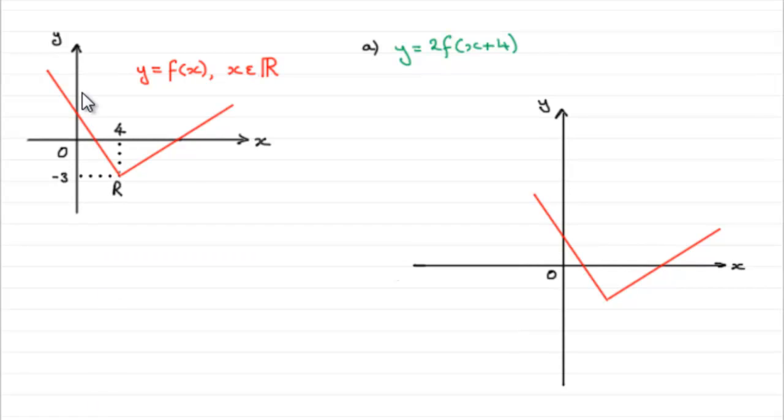So we're given this graph of y equals f of x defined for all real values of x, and it's got this point here r which is at the point 4 minus 3.